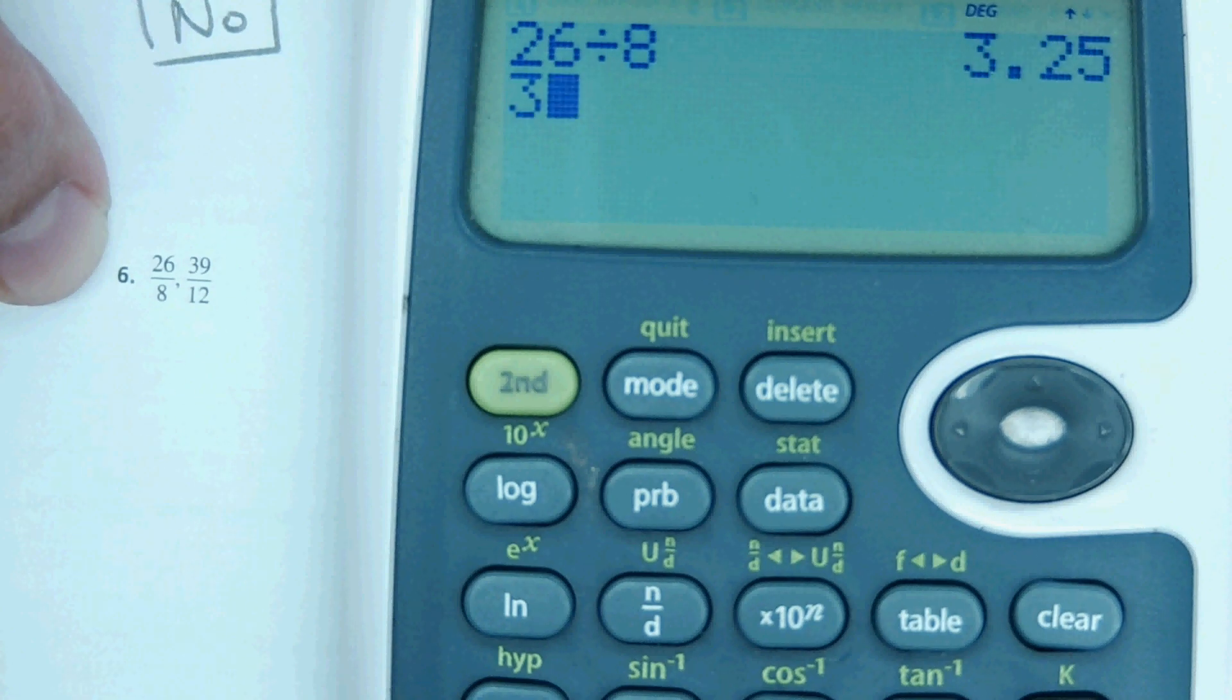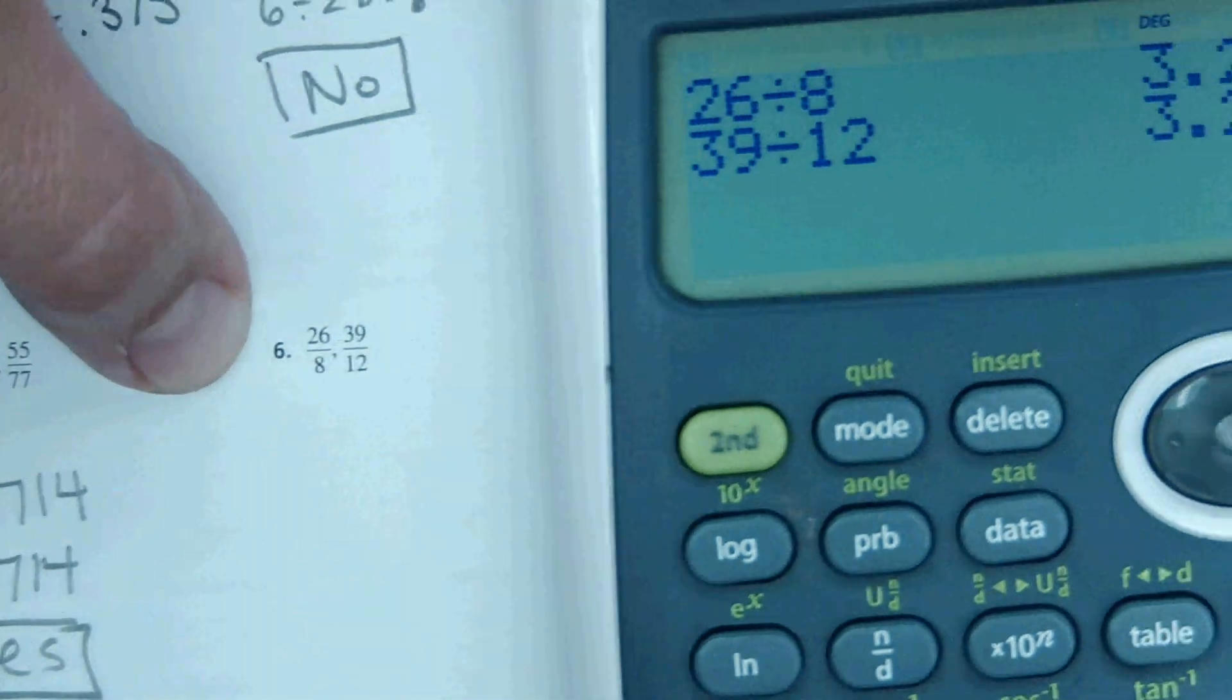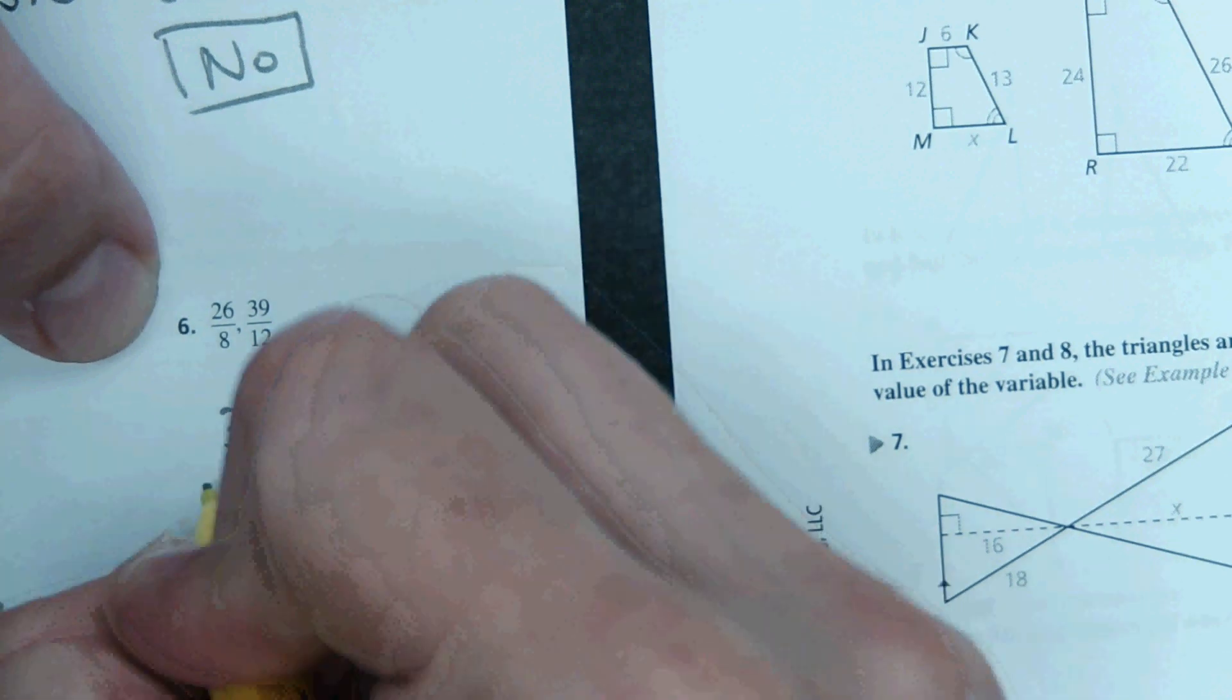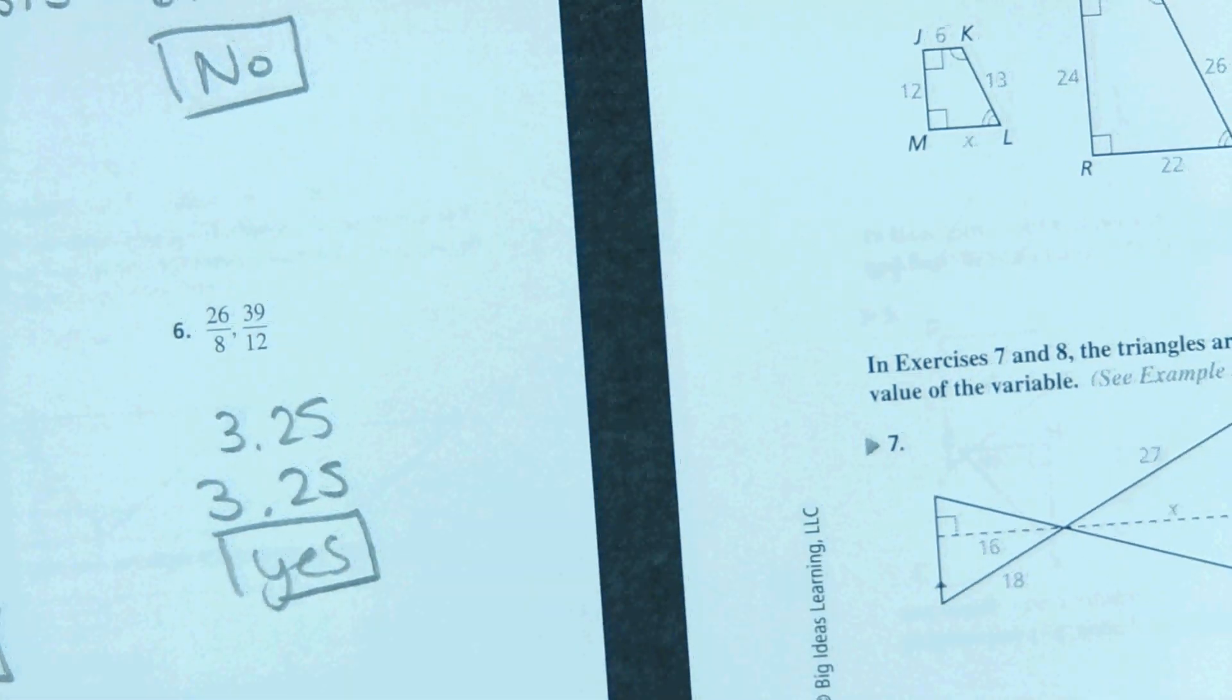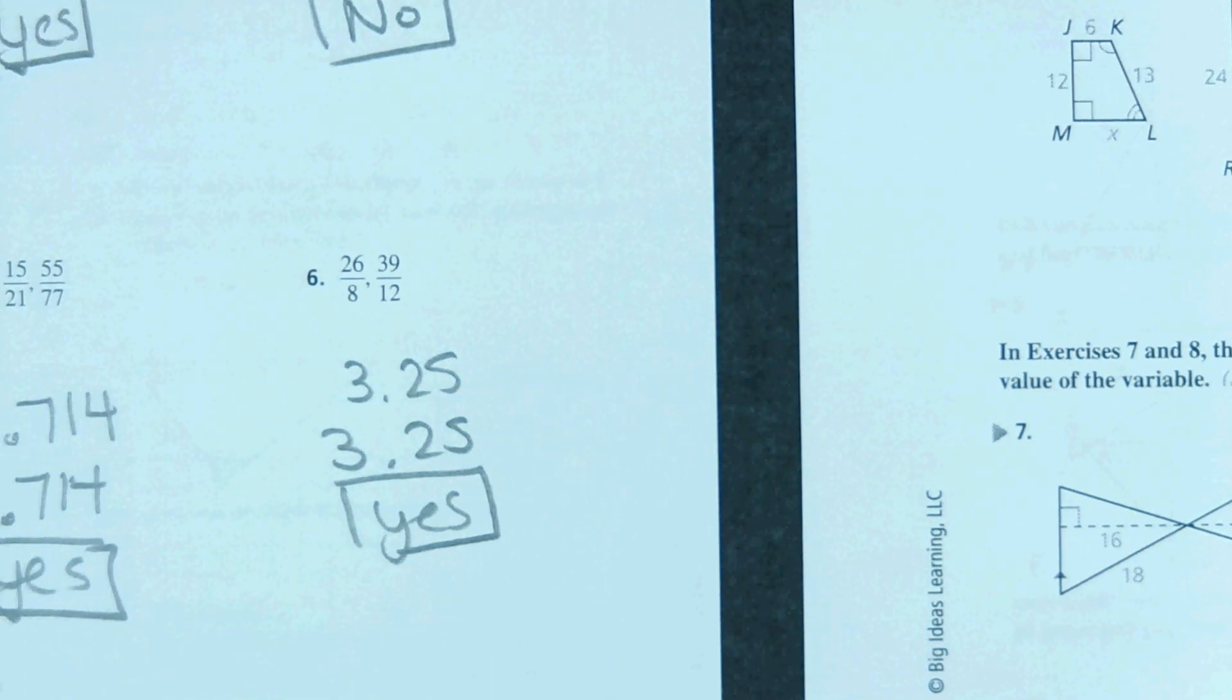And then number 6. Again, I'm just going to plug these in the calculator. 26 divided by 8, 39 divided by 12. Comes out to the same number, 3.25. So I get 3.25 and 3.25. So yes, those ratios are proportional.